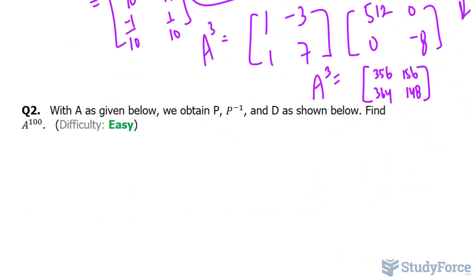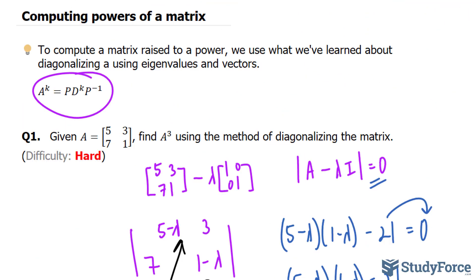And question number 2, with A as given below, where A is being raised to the power of 100, we obtain P, P to the power of negative 1, and D as shown below. As you can see, there are no matrices shown. But the point of this question is that if you're given P, the inverse of P, and D, whatever D happens to be, you will raise each of the elements within that diagonal to the power of 100. And then you multiply that with P, and that subsequently with the inverse of P. That's all it takes. And you end up with A to the power of 100. So there you have it. That is how to compute powers of a matrix.